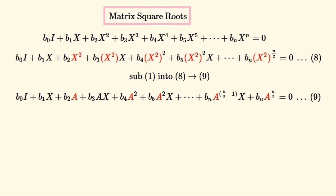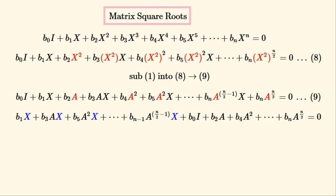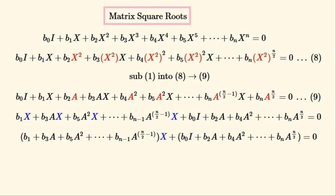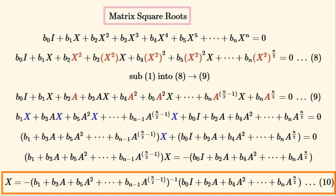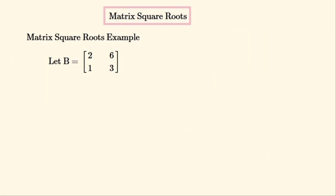We'll substitute A in for X², giving us this equation. After colouring all of the X terms blue, we'll gather all terms containing X to one side, then factorise with X outside the brackets. We'll subtract one term from both sides, then multiply both sides by the matrix inverse. Now we have a simple formula to find the square root of a matrix that doesn't require any eigenvectors.